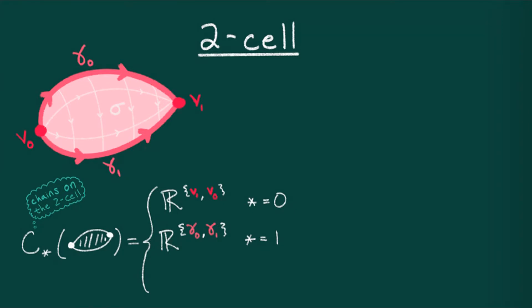And now for the higher dimensional piece, which is the two dimensional face connecting gamma zero and gamma one. As the two cell has only one face, the degree two piece will consist of formal linear combinations of a single face, sigma. And everything not in degree zero, one or two is the zero vector space.